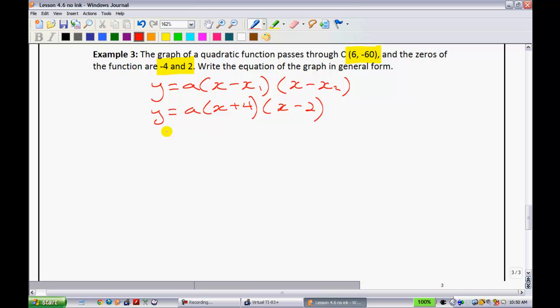That means that you can substitute the x information as the 6, and the -60 is going to go in for the y. So, I have -60 is equal to a onto (6 plus 4) bracket (6 minus 2).